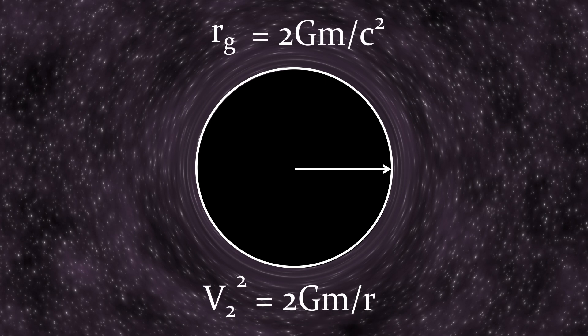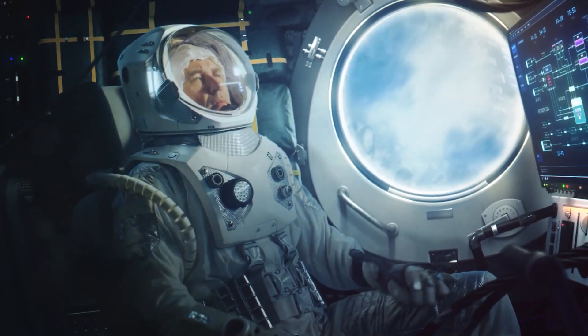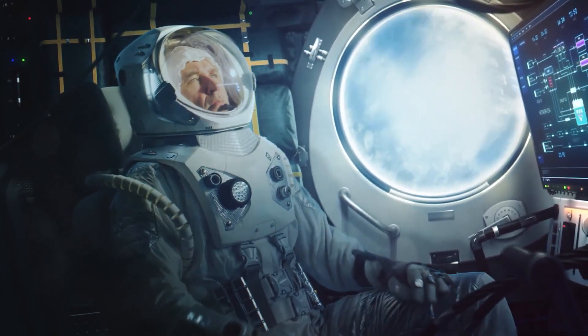If we now recall the classical formula for the escape velocity, we see that substituting the speed of light in this expression gives us the same result, meaning that on the surface of a black hole, the escape velocity is indeed equal to the speed of light. Hence, it is often said that since nothing can move faster than the speed of light, it is impossible to achieve escape velocity and flee from a black hole. This is an intuitively understandable explanation, but it should not be taken literally. It can indeed give the impression that one could escape from a black hole by moving with acceleration.